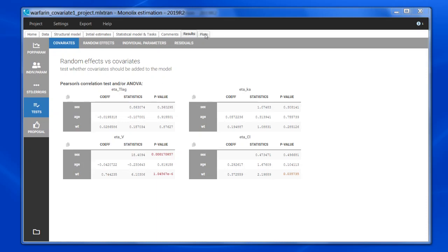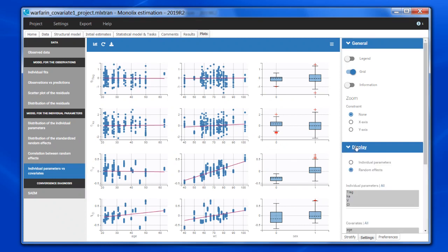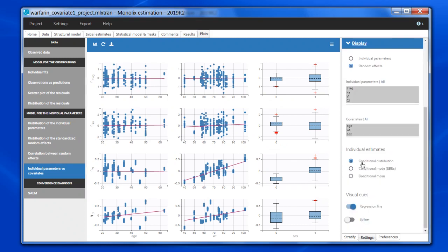These sampled values can be seen in the plots if I have chosen the default option, Conditional Distribution. And what you can see is that I have several values per individual. When doing the Pearson correlation test, we need to take into account that the several samples for one individual are not independent, they are correlated. For the Pearson correlation test between etas and covariates, it can be shown mathematically that we can use the average of these samples to do the test.